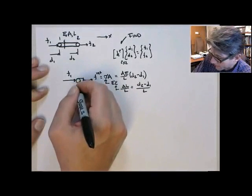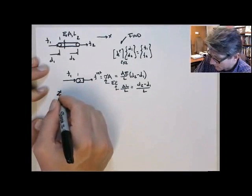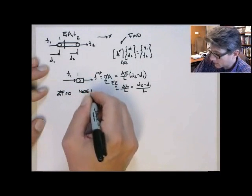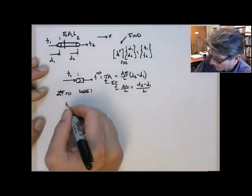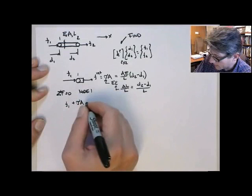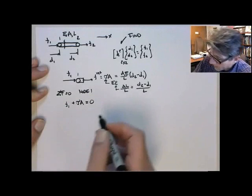If we look at the sum of forces on node 1 again, sum of f equals 0 for node 1. This gives us f1 plus sigma a equals 0. They're all acting to the right, so they're both positive. That's the force balance on node 1.